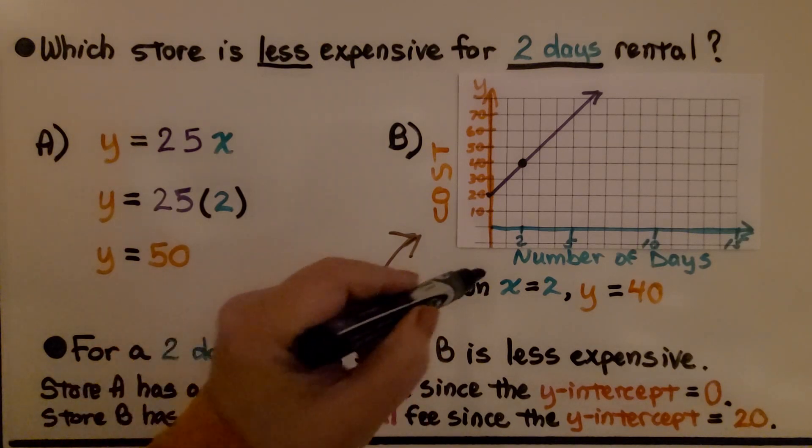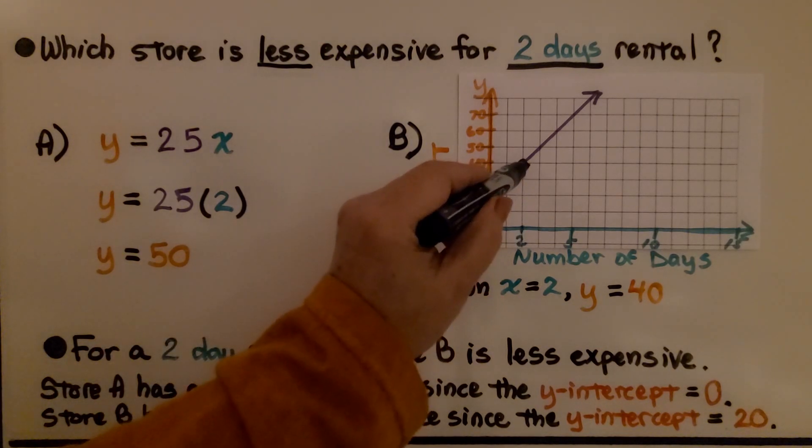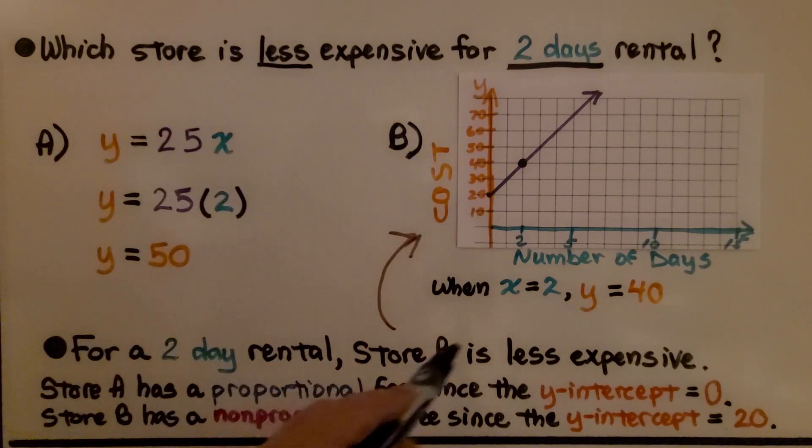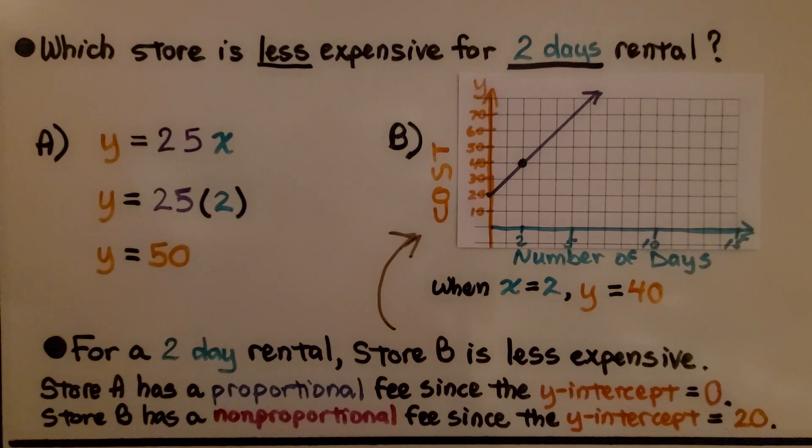For store B, here's 2. It's at 40 for y. For a two-day rental, store B is less expensive.